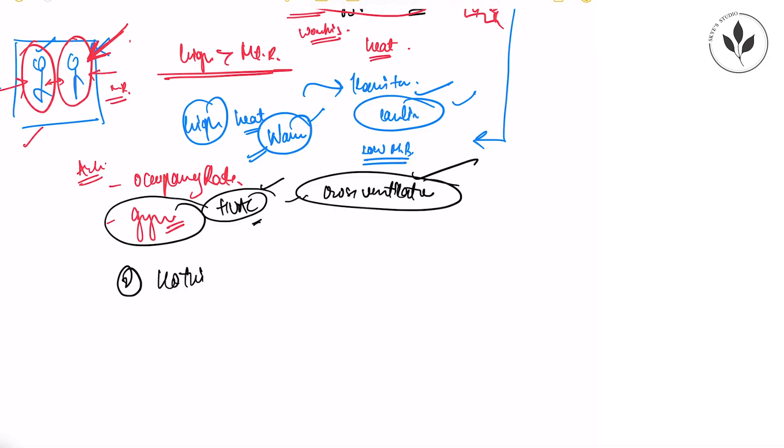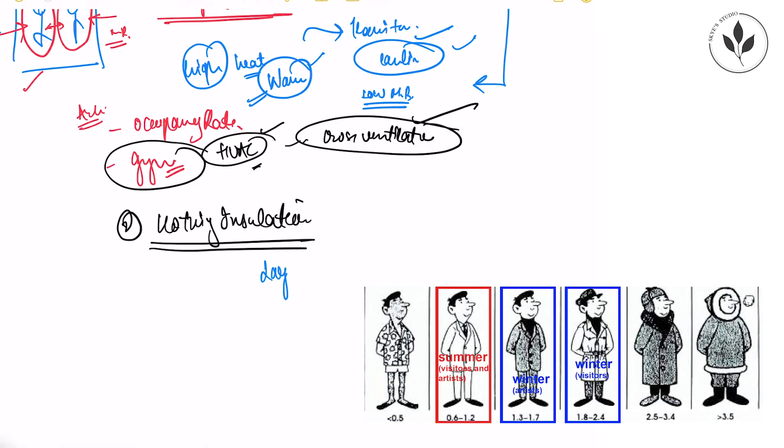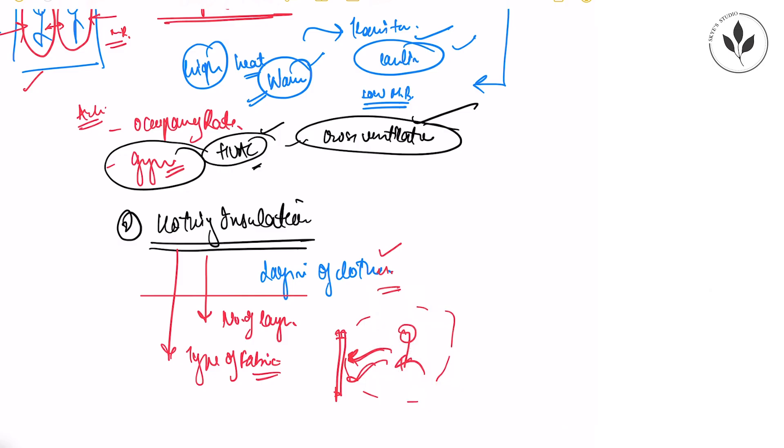And last point is clothing insulation. Now clothing, the example for this is clothing insulation is basically the layering of clothes that we do during winters. The more the layers, the insulation depends on the number of layers, plus the type of fabric. If the fabric is wool, the heat energy produced by your body will not go out of your body and it will get trapped. So that is why you will feel warmer. Because every type of fabric has its own thermal resistance.